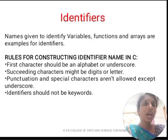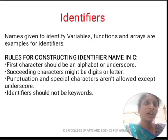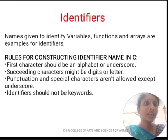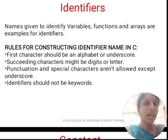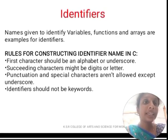Next, we are going to see about identifiers. A name given to identify variables, functions, and arrays are examples of identifiers. There are rules for constructing an identifier in C: the first character should be an alphabet or underscore; succeeding characters may be digits or letters; punctuation and special characters are not allowed except underscore; and an identifier should not be a keyword.